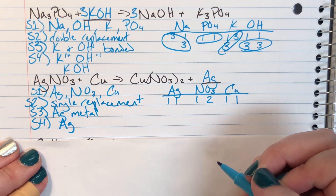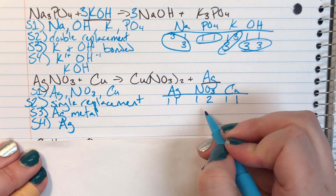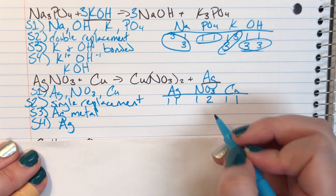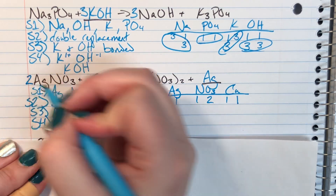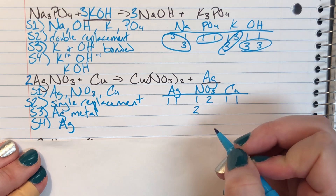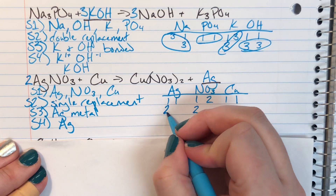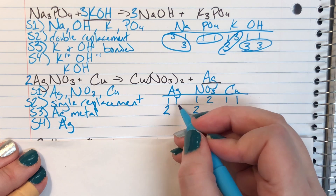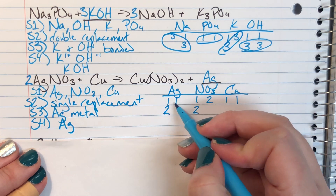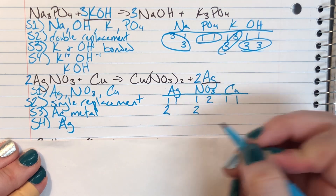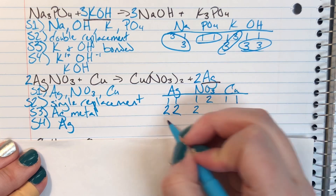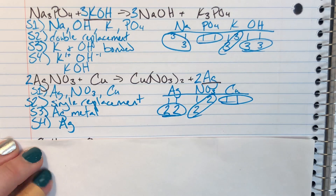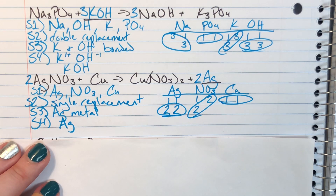Both metals are balanced; only nitrate is off. I have 1 but want 2, so I add a coefficient of 2 on the left. That balances nitrate but messes up silver — I now have 1 but want 2, so I add a coefficient of 2 in front of silver. That balances the reaction and I'm done.